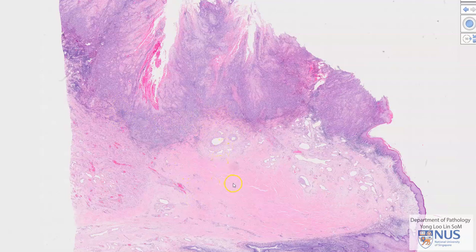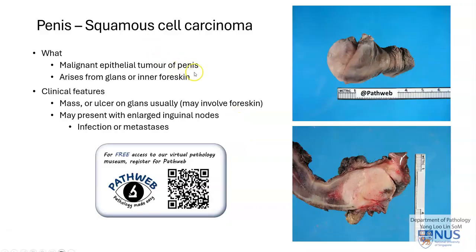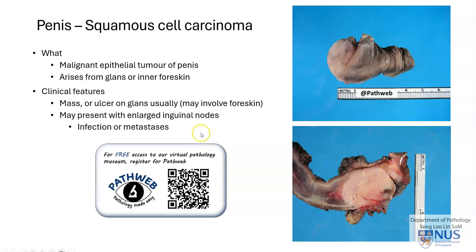Let's learn more about squamous cell carcinoma of the penis. This is a malignant epithelial tumor that arises from the glans or the inner foreskin, and usually there will be a mass or an ulcer. Here we can see an ulcer on the glans in the region of the coronal sulcus, and here there is a mass involving the glans, the proximal penis, and also the foreskin. Patients may also present with enlarged inguinal lymph nodes, which can be due to metastatic squamous cell carcinoma or infection.